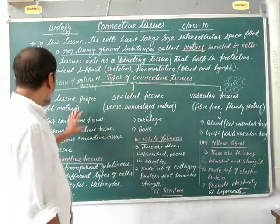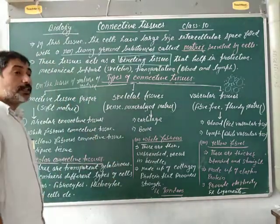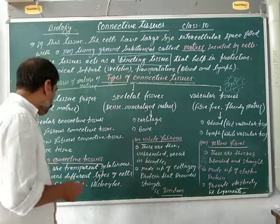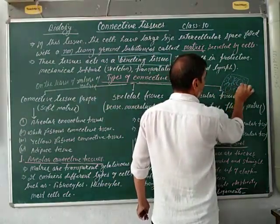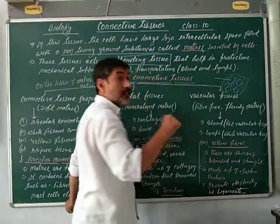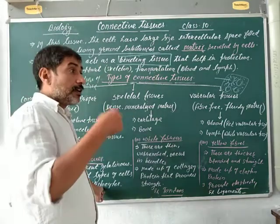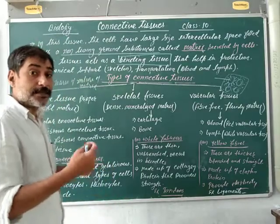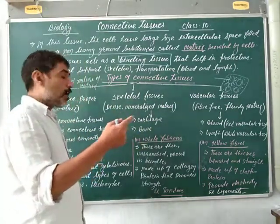First, areolar connective tissue. In areolar connective tissue, the matrix is transparent and gelatinous. It contains different types of cells. This gelatinous matrix contains different types of cells, such as fibrocytes — which make fibers for the connective tissue — histocytes, and mast cells that secrete the matrix. Mast cells help in the production and secretion of matrix.